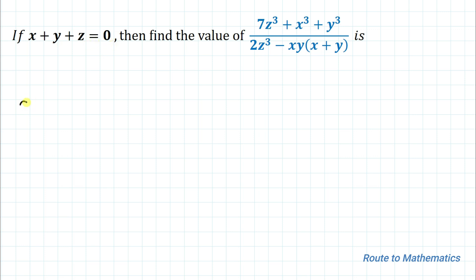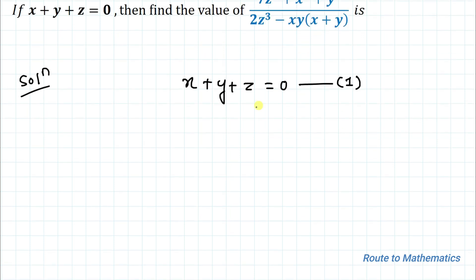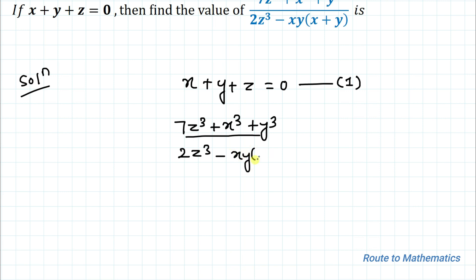Without any delay, let's start the solution. We have given x + y + z = 0 — let's take it as equation one. We are asked to find (7z³ + x³ + y³) divided by (2z³ − xy(x + y)). Let's take the numerator term as P and the denominator term as Q.